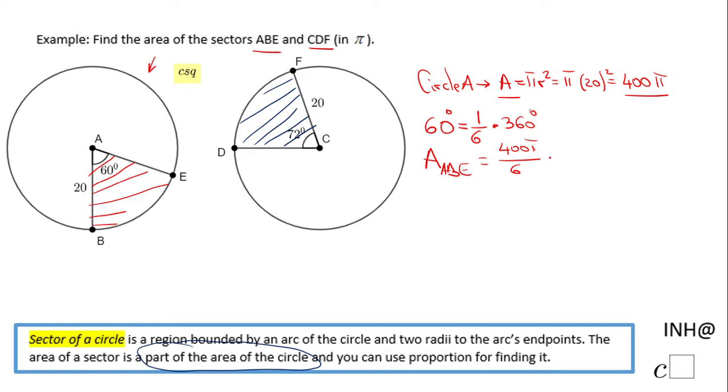In this case we can simplify. Both of them are even numbers, so we can simplify by 2. 400 divided by 2 is 200, so 200 pi, and 6 divided by 2 is 3. So the area of the sector ABE is 200 pi over 3, and I will keep the answer in this format. Nothing else can be simplified.